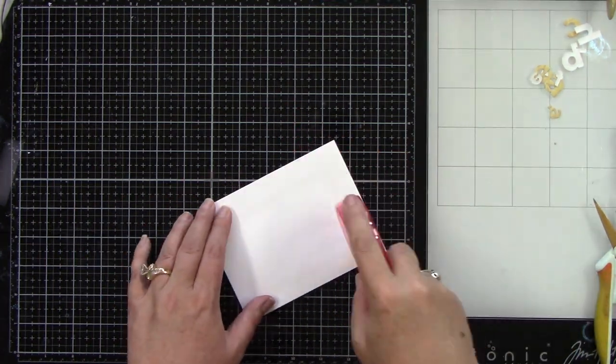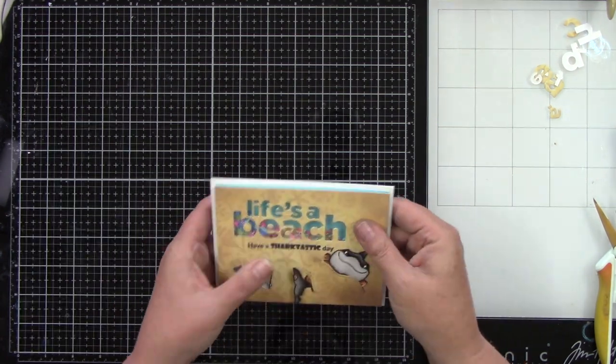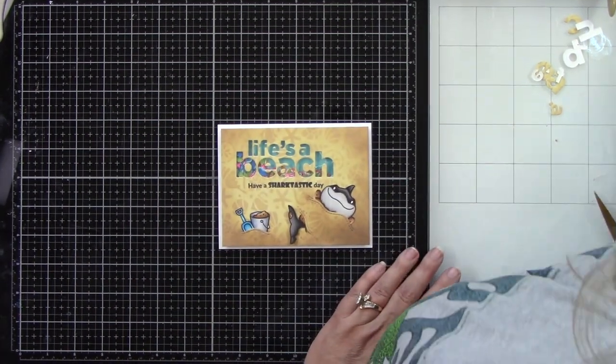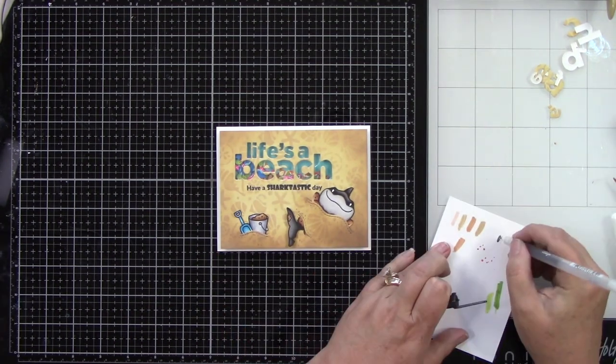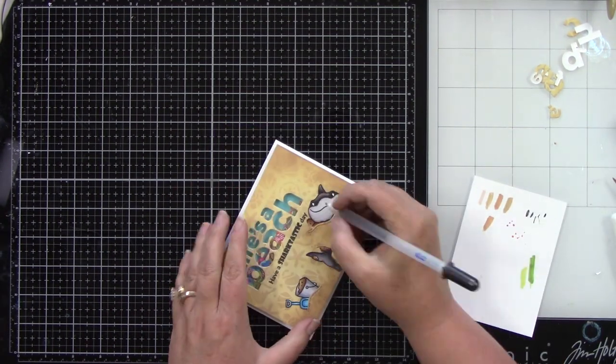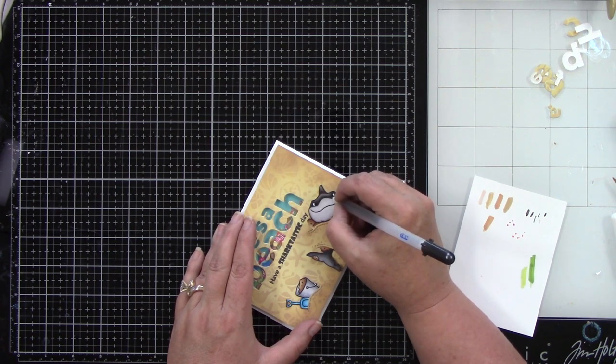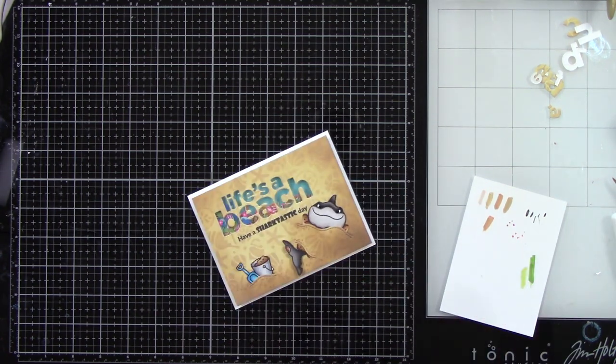Then I want to add this to a white A2 size card base. Because it's trimmed slightly smaller, we have a nice white mat. Then I want to use my black glaze pen for his eyes and then my white gel pen for some highlight detail.